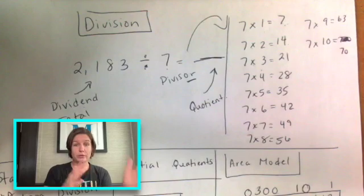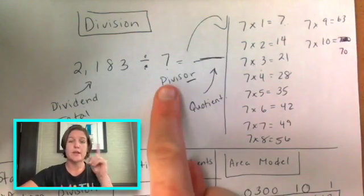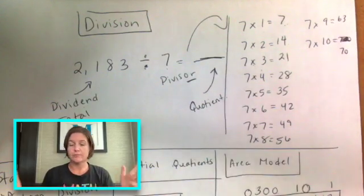The only difference between fourth grade and fifth grade in terms of division is that in fourth grade, we use a one digit divisor. And in fifth grade, it's a two digit divisor. So that's that. All right. So I hope that made sense for you.